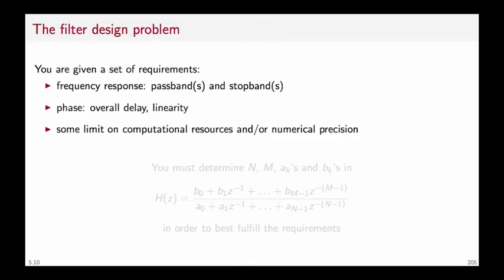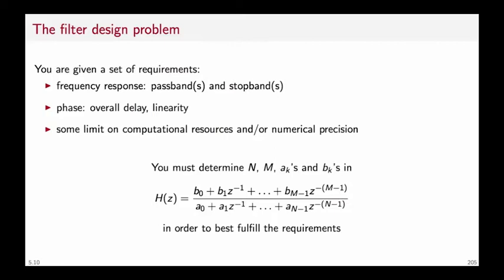Let's review the filter design problem. Suppose you are given a set of requirements, such as a frequency response specified in terms of where you want the pass band to be and where you want the stop band to be — you could have multiple stop bands and multiple pass bands. You will probably have some phase requirements as well, namely whether linear phase is necessary or not, and most often you will have some limit on the computational resources you can use. We are interested in realizable filters, so our final design will be expressed as a rational transfer function, and our problem becomes finding the degree of the numerator and denominator, as well as the coefficients of the polynomials involved, in order to best fulfill the requirements.